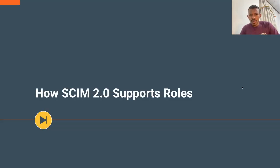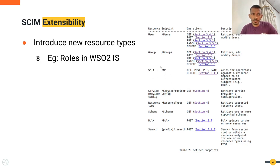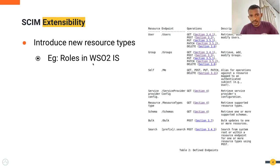Let's begin the session by discussing how the SCIM 2.0 specification supports the roles resource type. In the SCIM 2.0 specification there's a set of well-defined resources — you may have already seen these resource types in WSO2 Identity Server: users, groups, self, service provider configs, and so on. The roles resource type is not in the specification, but the specification allows adding new resource types using SCIM extensions.